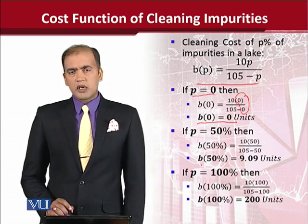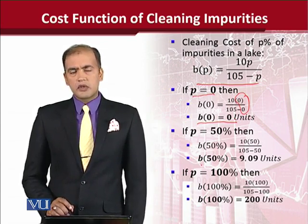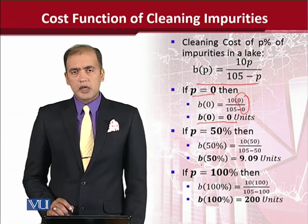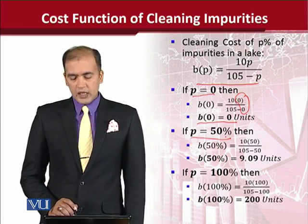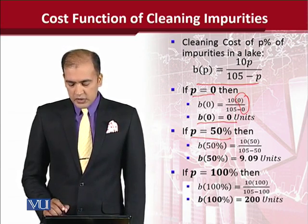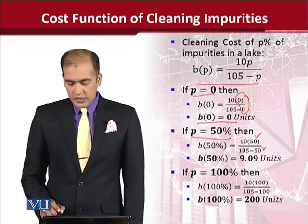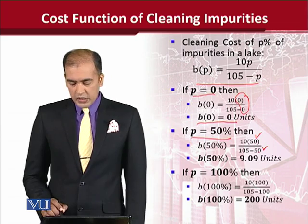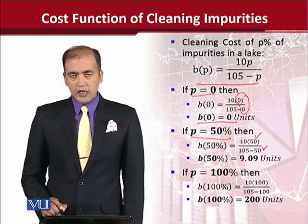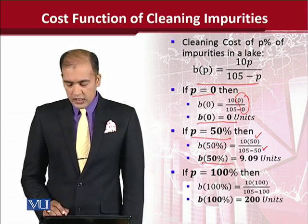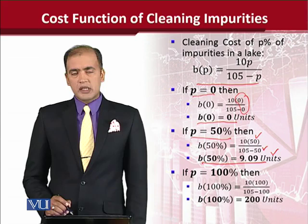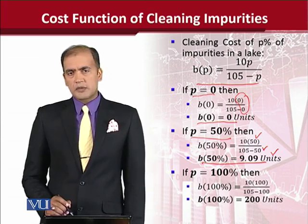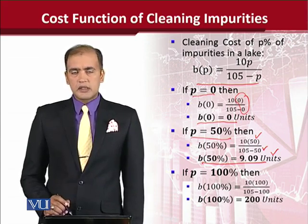But we are talking about cleaning, so we should examine the situation where there is some cleaning. For example, if 50% of the cleaning is to be done, then instead of 0 we put 50 in place of P. Solving this, we get 9.09 units. So the cost has started to arise — from 0 it has become 9.09.